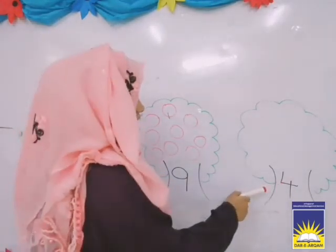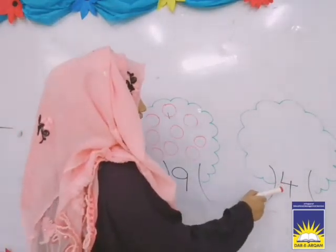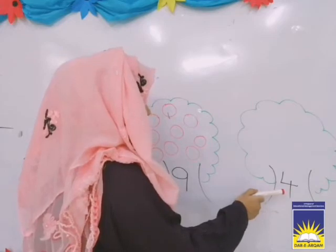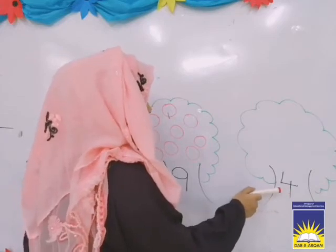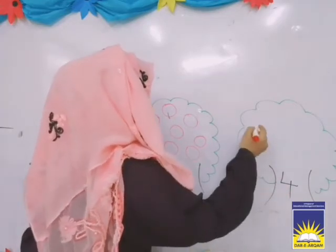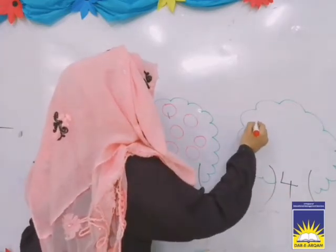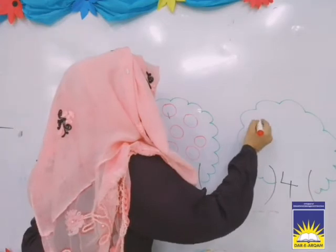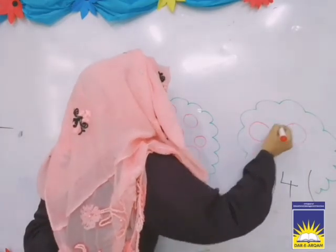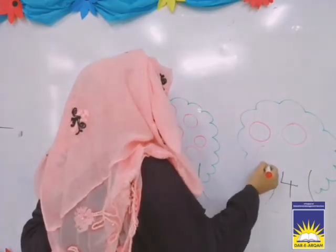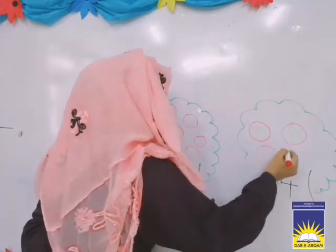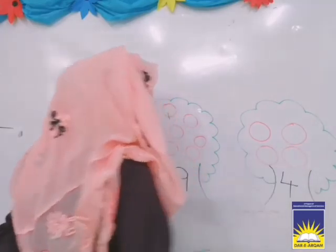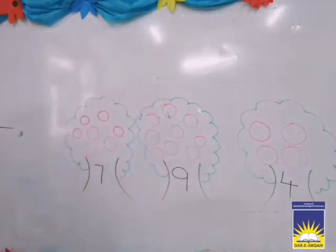Come on this tree. Which number is this? Number 4. So I will make 4 oranges: 1, 2, 3, 4. Okay?